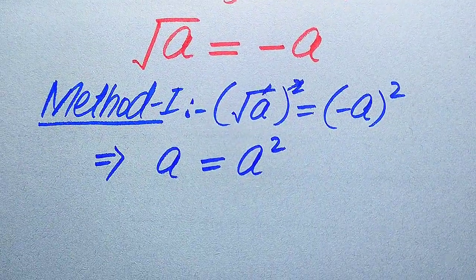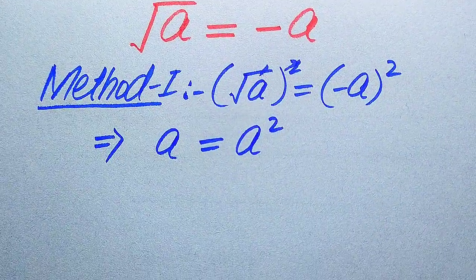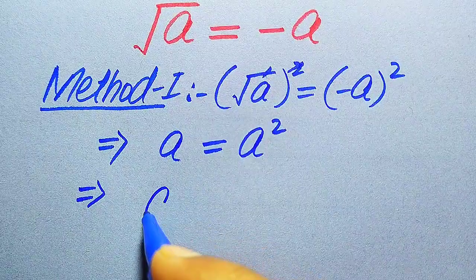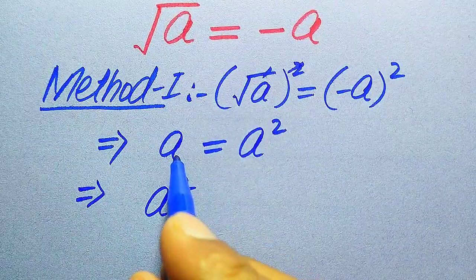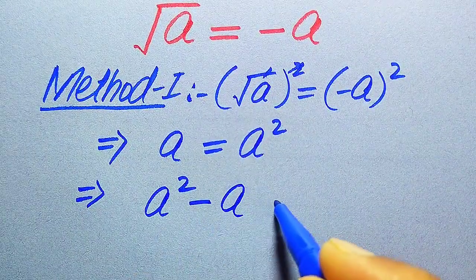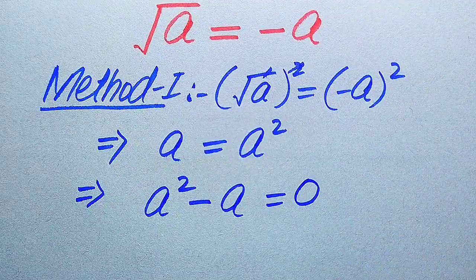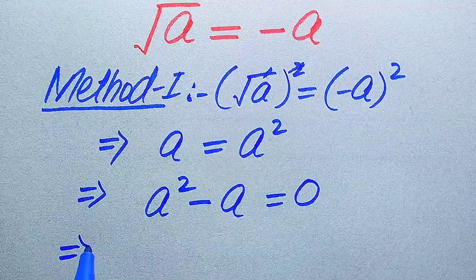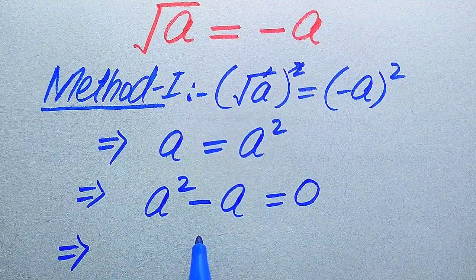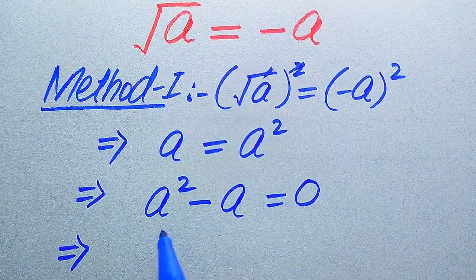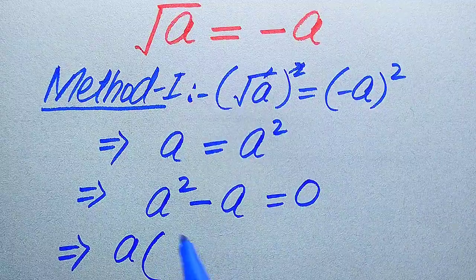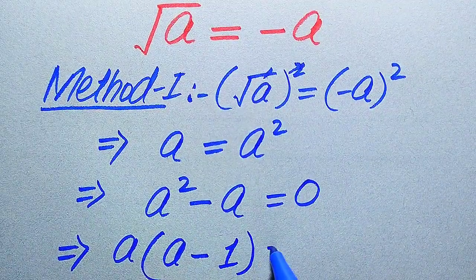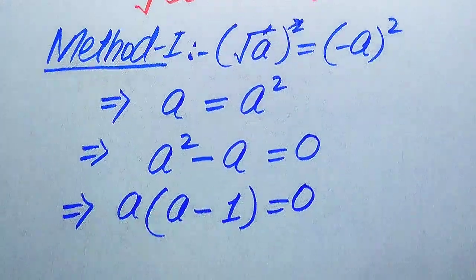Now for the values of A we move this A from the left hand side to the right hand side, and it will be written as A squared plus A. When we move it to the right hand side it becomes minus A, and this whole equation equals zero.